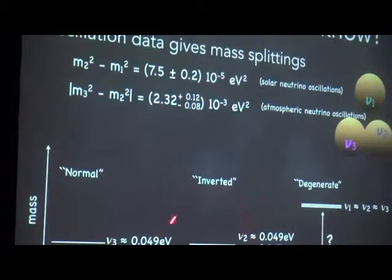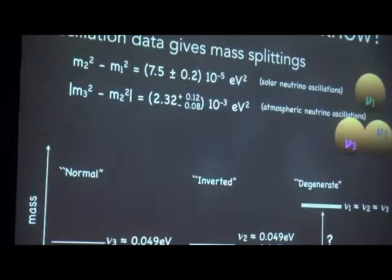Oscillation data gives us the square of the mass splittings between eigenstates. Solar neutrino oscillations tell us that m2² − m1² is about 10^−4 eV², and atmospheric neutrino oscillations give a larger mass splitting between states 2 and 3 (or 1 and 3) of about 10^−3 eV². We know the mass splittings but not the individual values m1, m2, m3. There are three qualitatively different arrangements consistent with oscillation data. The first is the normal hierarchy: m1 is lightest (possibly zero), m2 ≈ 0.01 eV, and m3 ≈ 0.05 eV.